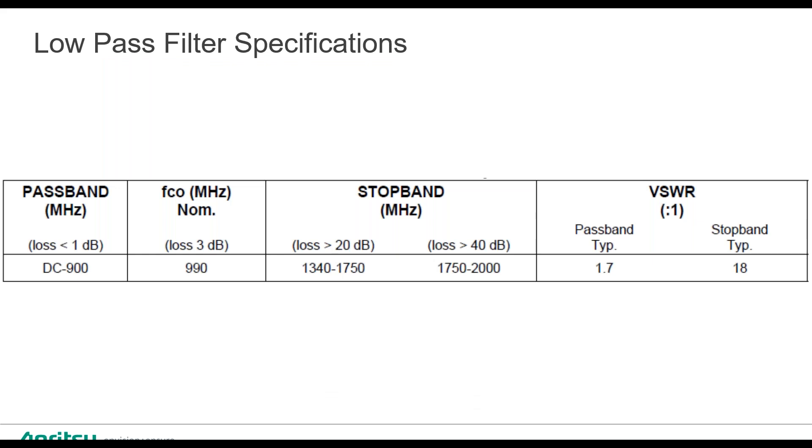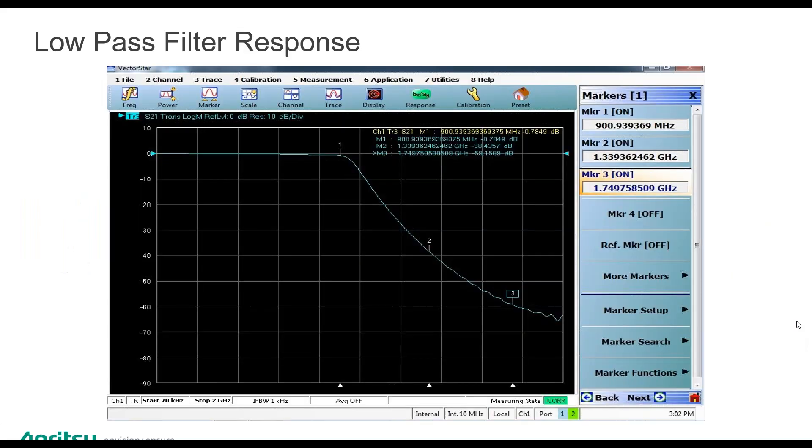Here are some specifications for our low-pass filter. You'll notice the pass band is DC to 900 megahertz. The frequency cutoff, 3 dB loss, is 990. Then we have a stop band, and we have our VSWR specifications. If we look at the response of this filter, you can set your marker to the pass band, and you can see that we have less than 1 dB of loss for the pass band.